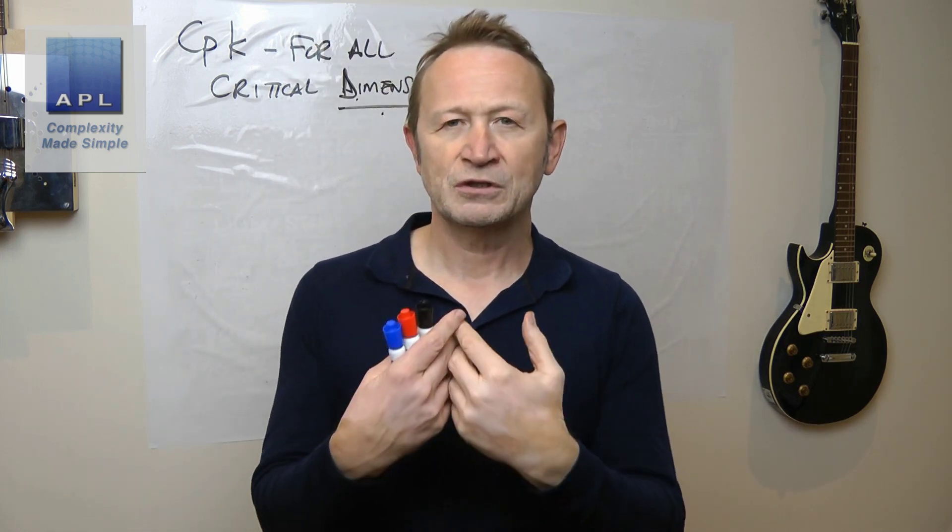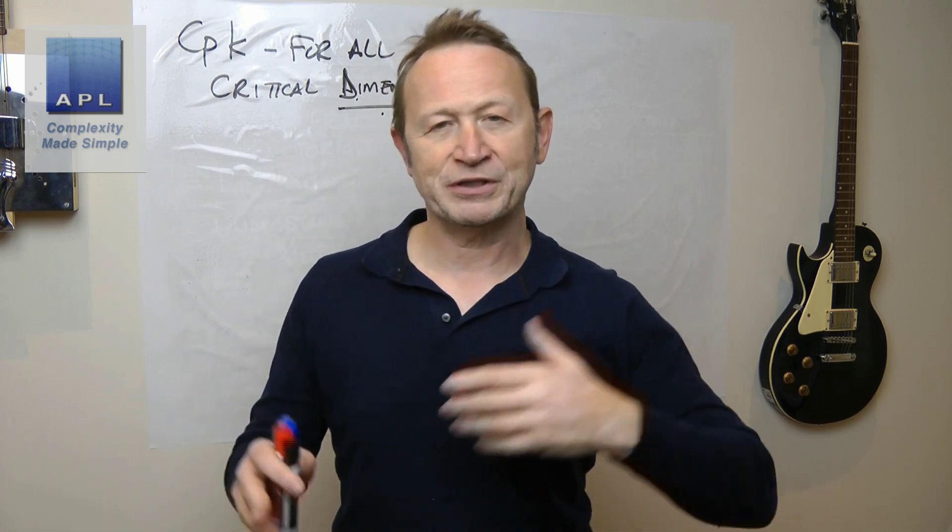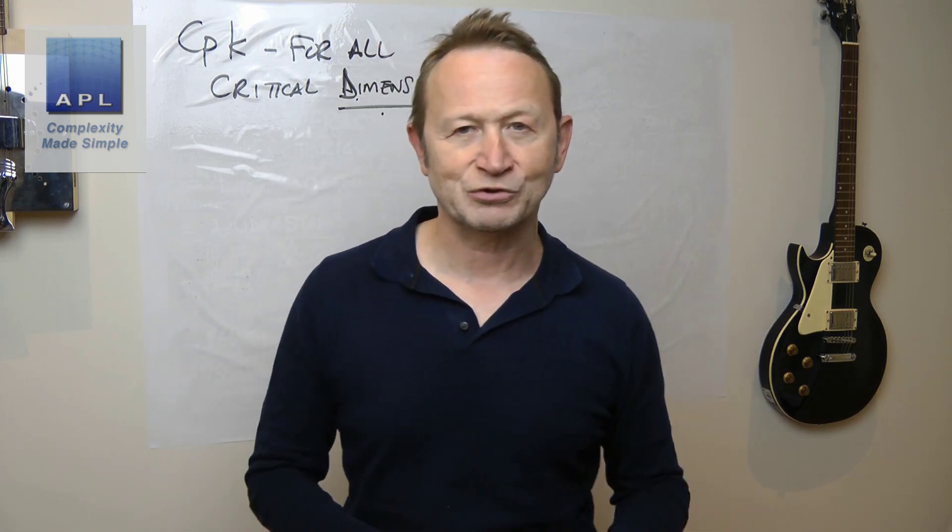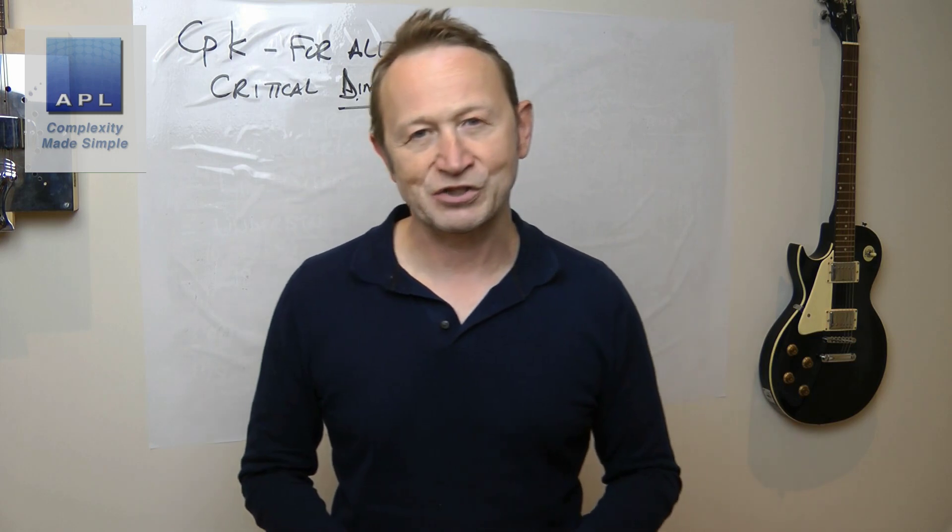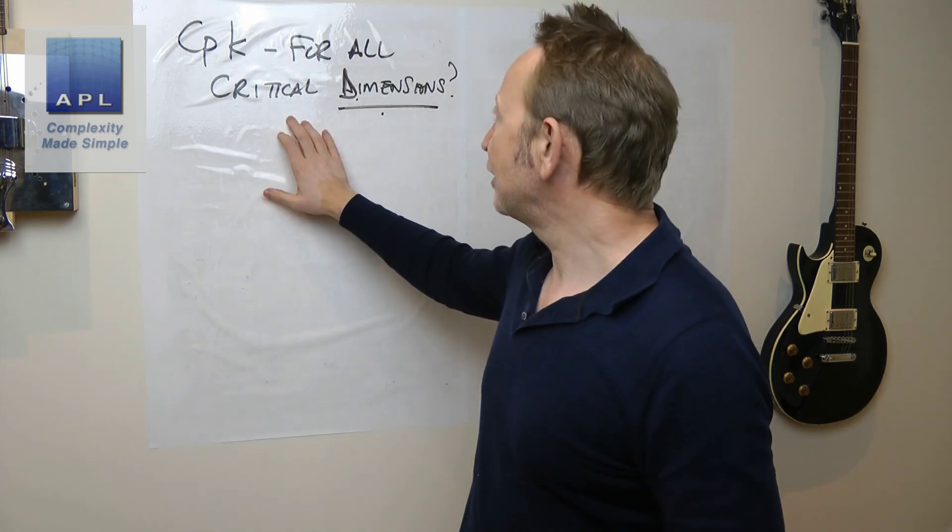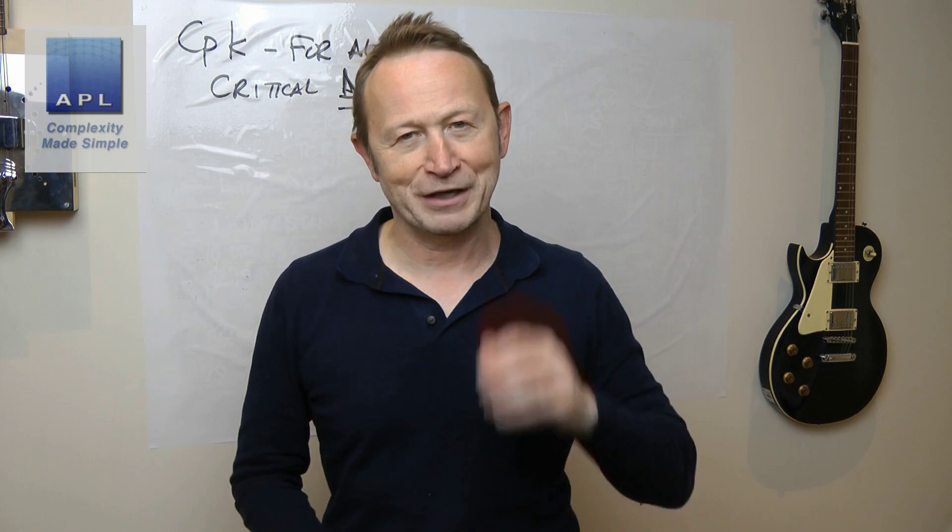I've got a video out there - I'll leave a link at the bottom - that explains CP, CPK, Sigma level, all sorts of different capability statistics. The question is, that's fine for individual dimensions...